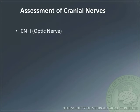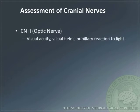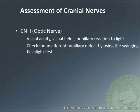Cranial nerve 2 is the optic nerve. It can be tested by visual acuity, visual fields, and pupillary reaction to light. It is also important to check for an afferent pupillary defect by using the swinging flashlight test.